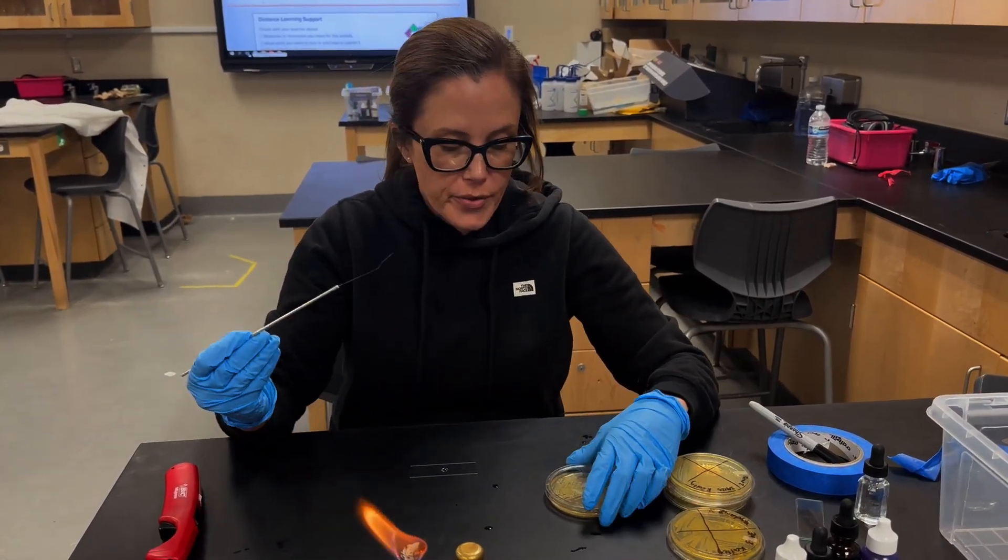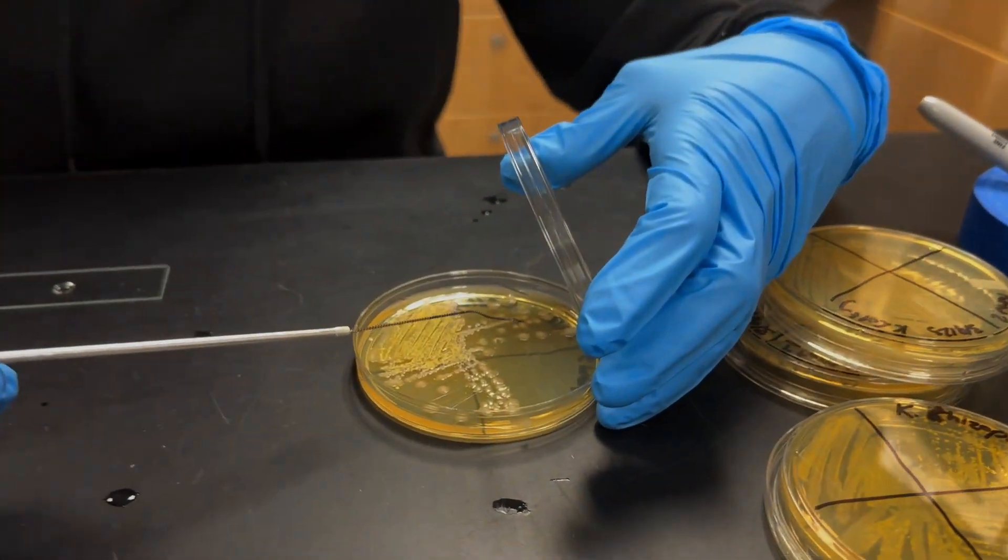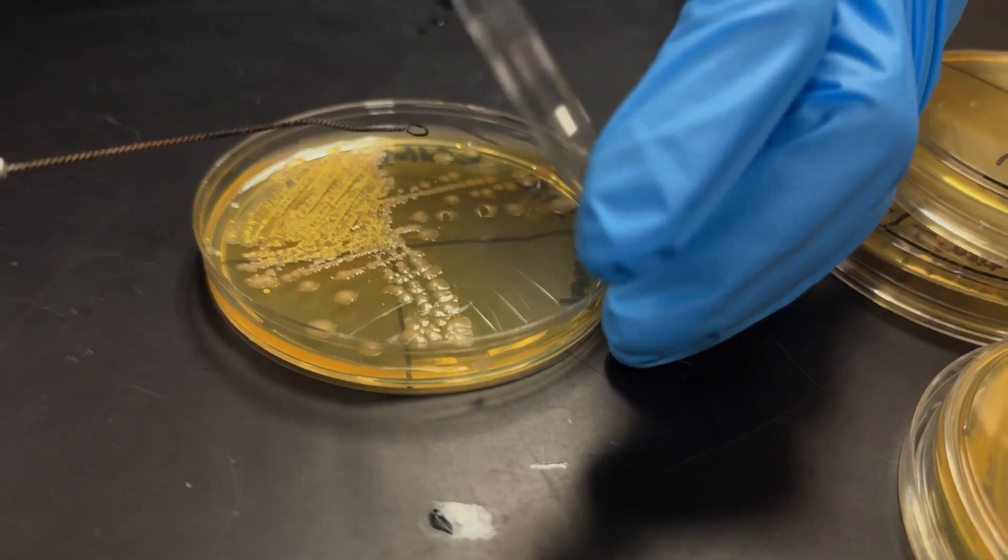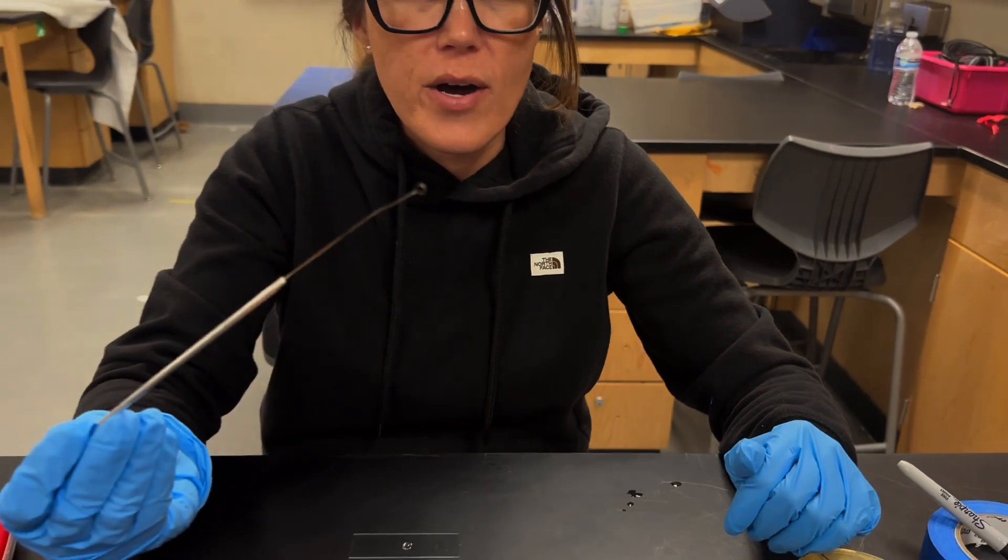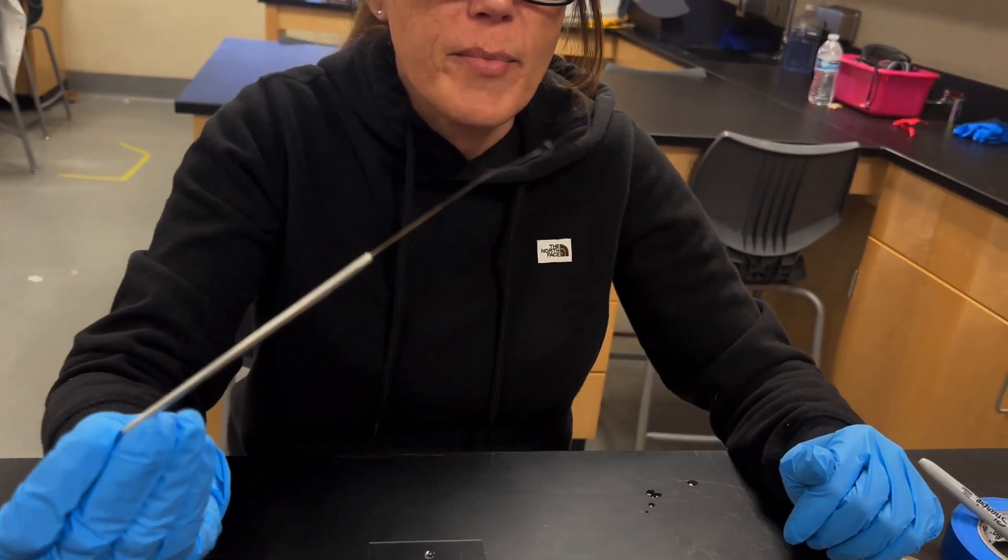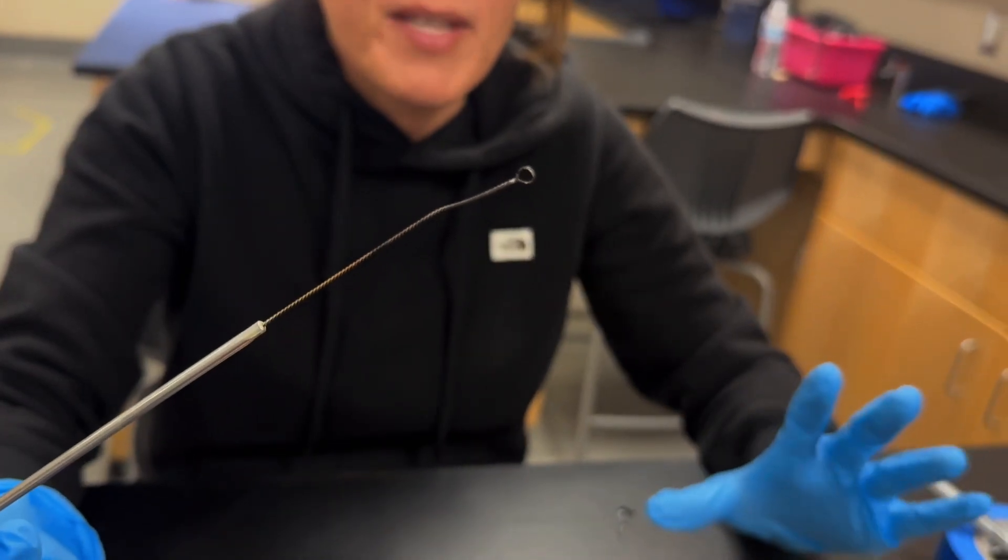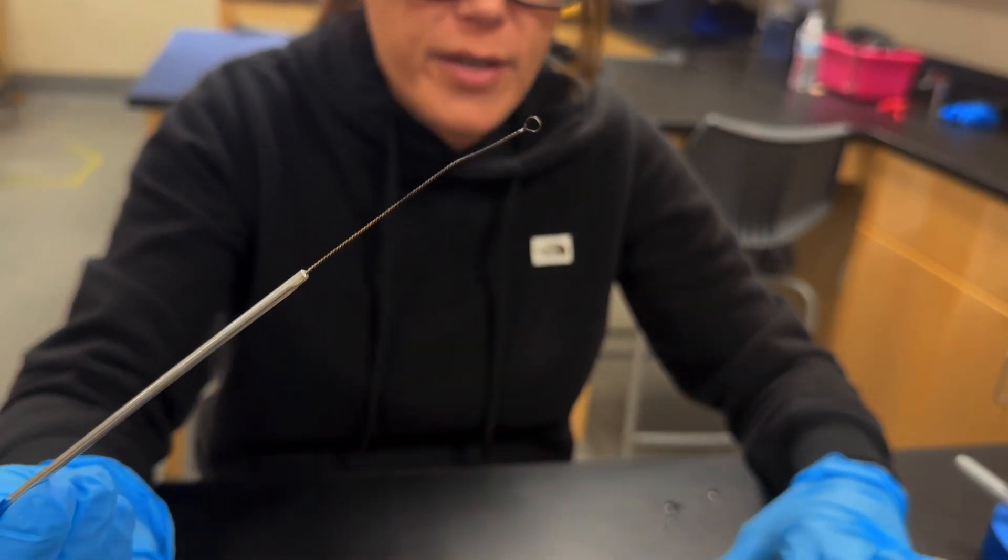So this is probably cool now. So we're going to go in and we're just going to touch this to one of the colonies. And it's important that you don't grab too much bacteria. You can see there's hardly anything on the loop. And remember this is microscopic. If it's too clumpy, it's going to be difficult for us to see under the microscope. So we just need to touch it to the bacterial sample.